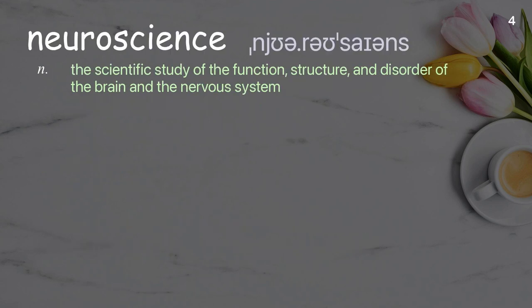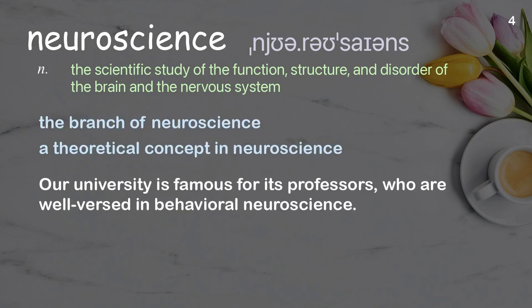Neuroscience: the scientific study of the function, structure, and disorder of the brain and the nervous system. Examples: the branch of neuroscience; a theoretical concept in neuroscience. Our university is famous for its professors who are well-versed in behavioral neuroscience.